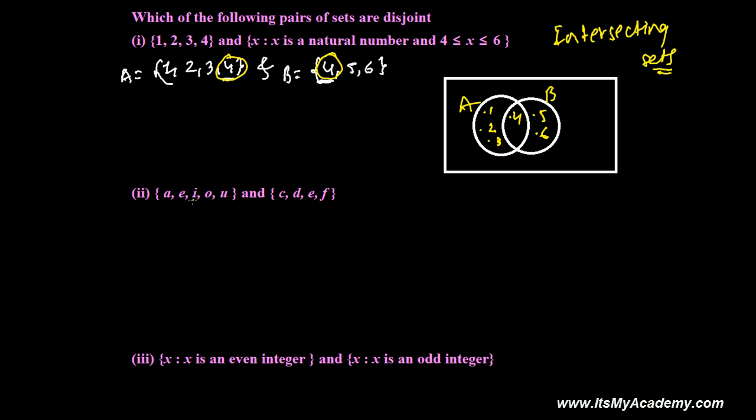And the second one is A, E, I, O, U and it is C, D, E. From watching you can say directly it is intersecting. So what is that? E is common so let me make Venn diagram so it will be more better.